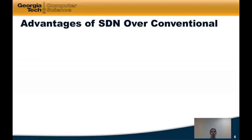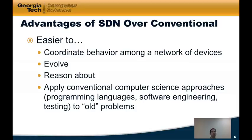So, what are the advantages of software-defined networking over conventional network architectures? First of all, SDNs are much easier to coordinate. A network operator can write a program that allows the behavior of different network devices to be coordinated. For example, if you wanted to load balance traffic across a network, or if you wanted to make sure that your security policies didn't interfere with your load balancing policies.